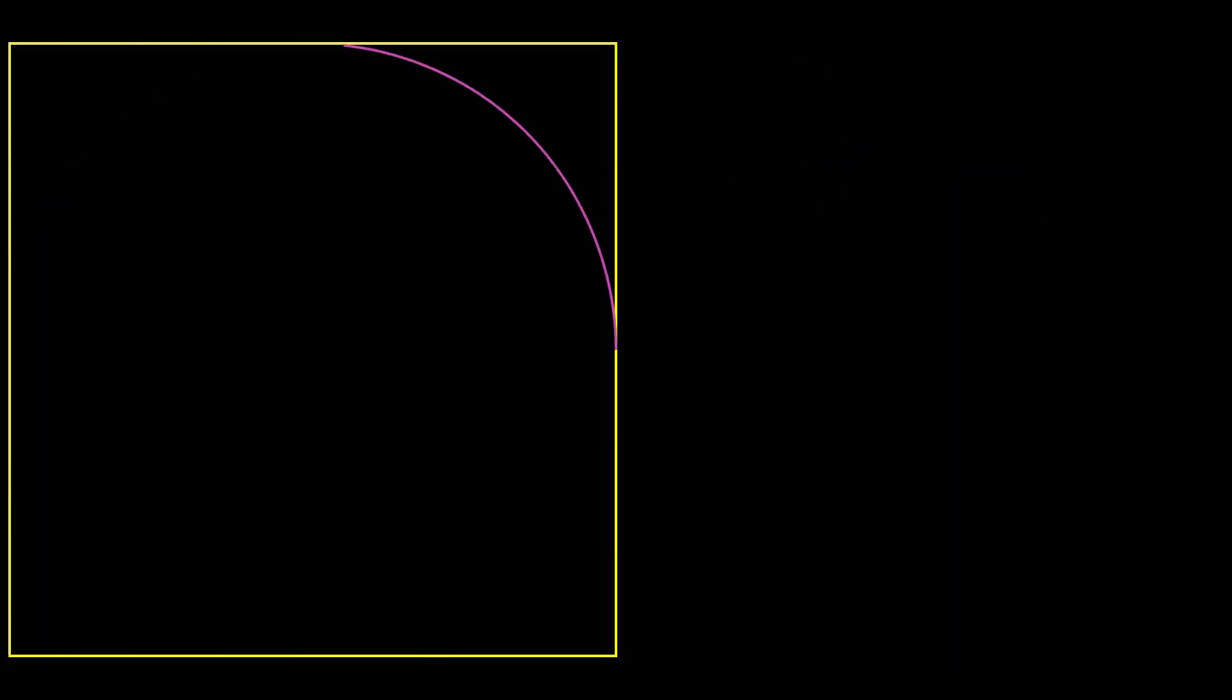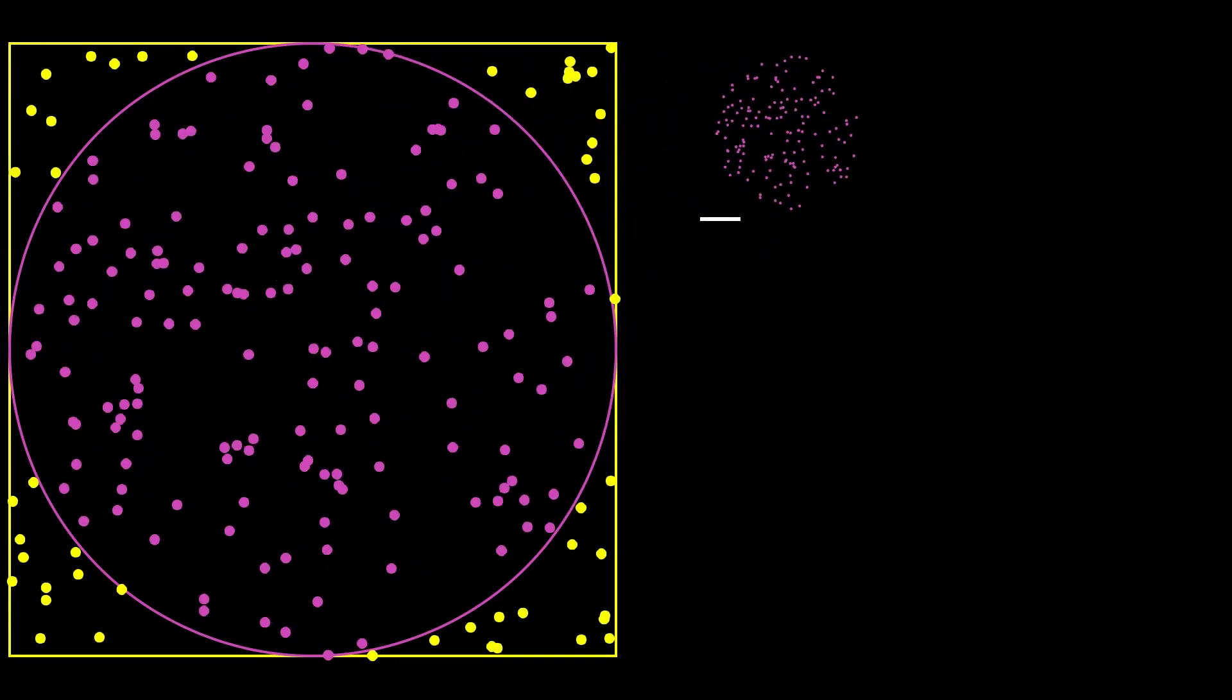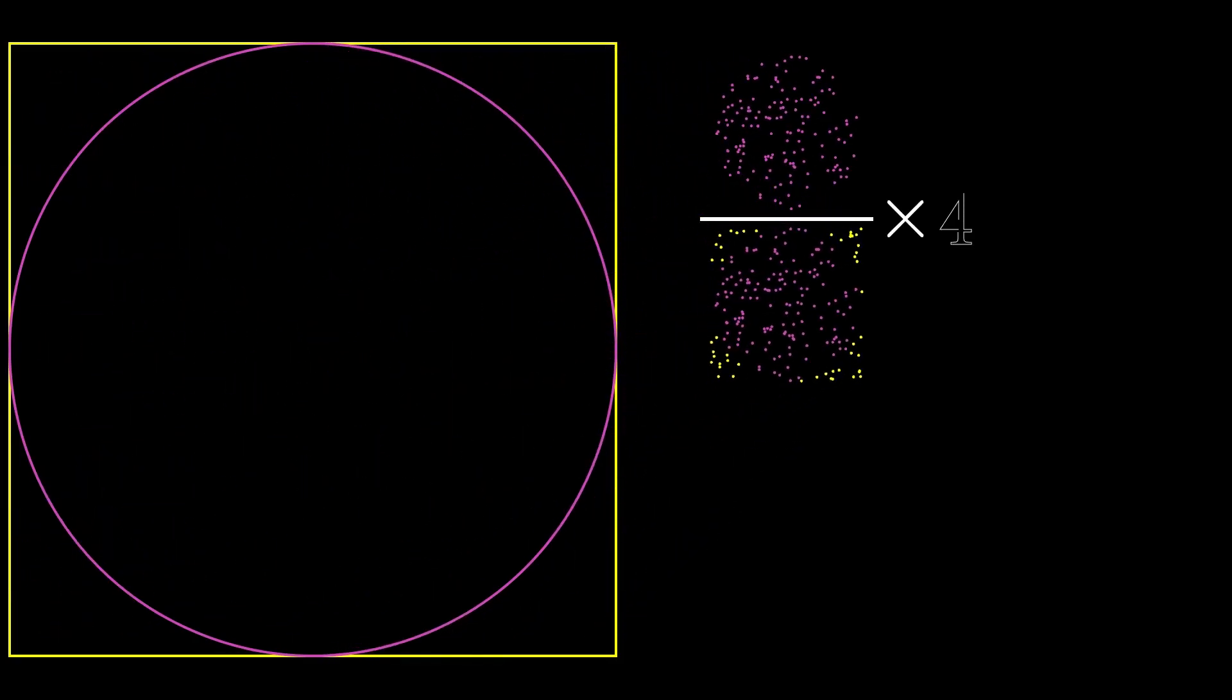So let's do this first with 200 dots. We take 200 dots. We count them. We divide by the total number of dots. Multiply by 4 and we get about 3.04.